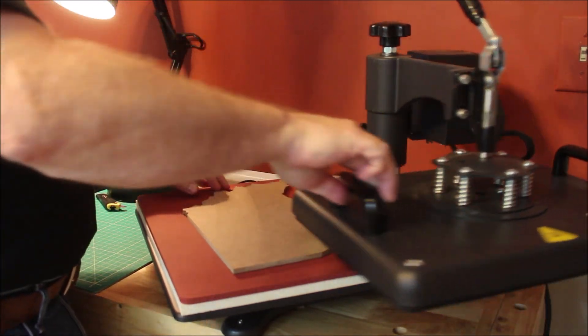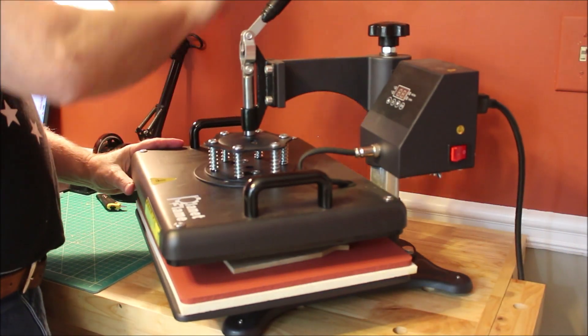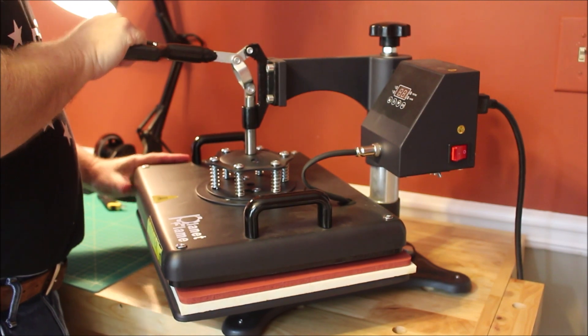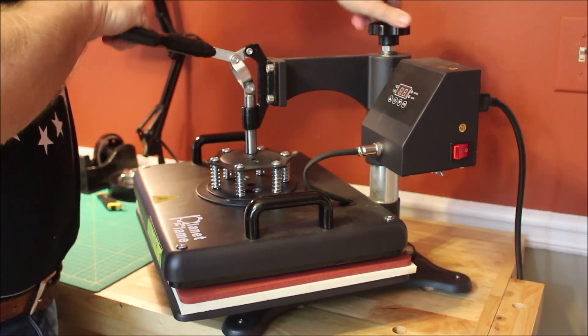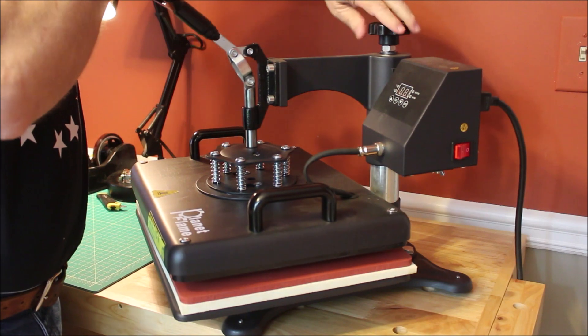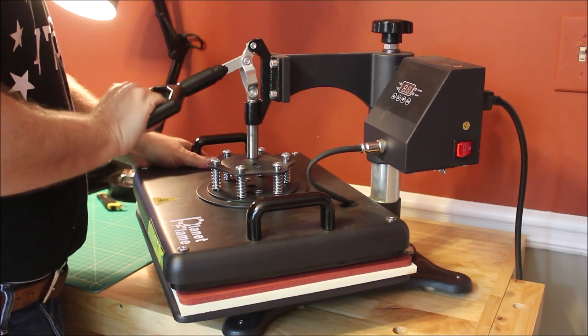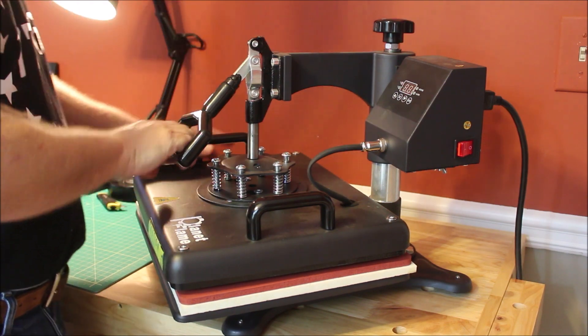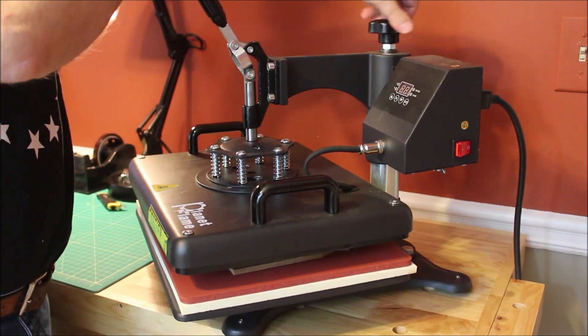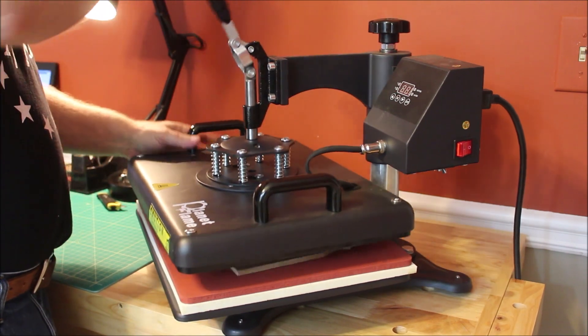Before I heat up the heat press, I need to swing it around and make sure I have the pressure adjusted. And it's a little too snug here, so I'm going to loosen it up. I still want a pretty firm pressure, but I've got to be able to get it to close. Maybe just a little bit less. And there we go.